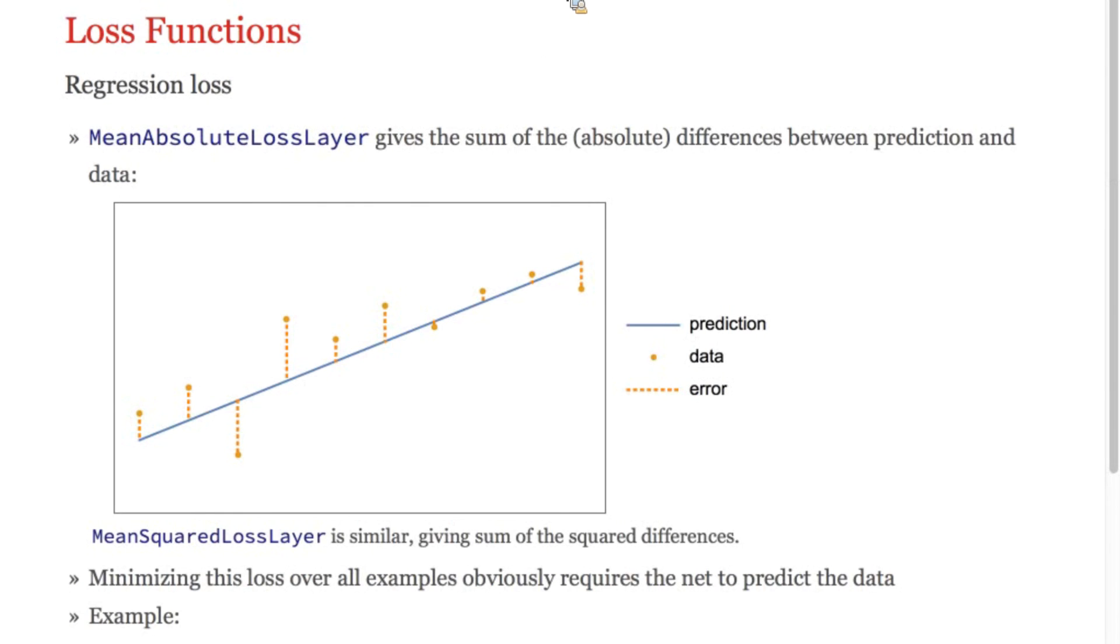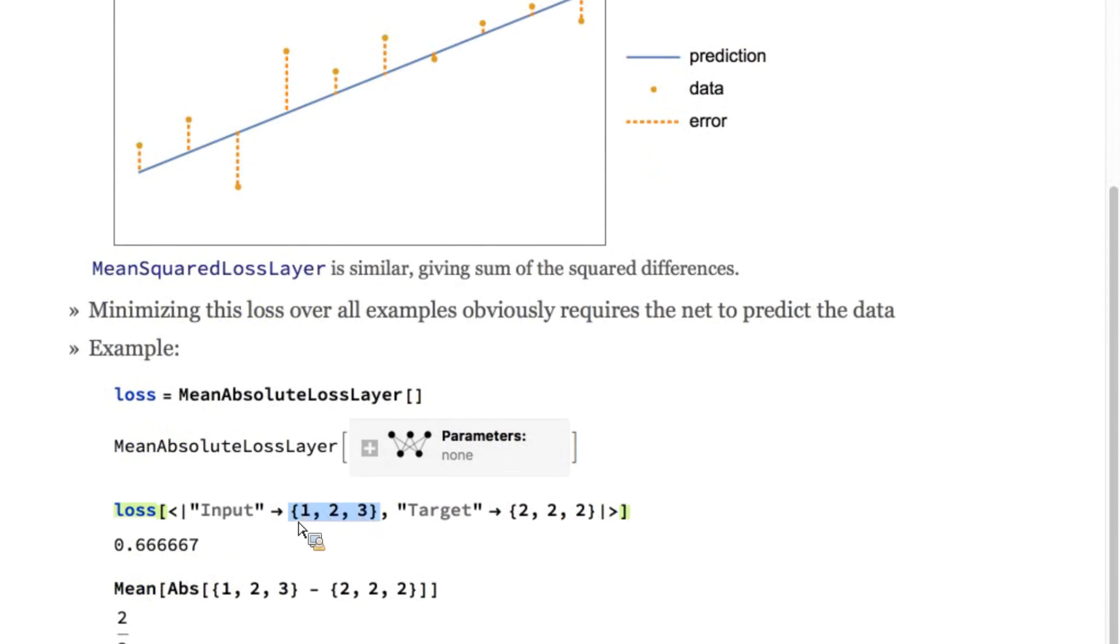Let's look at an example. For regression problems, you'll usually want to use mean squared loss. But here I'll illustrate mean absolute loss because it is easy to visualize. They're fairly similar. Mean absolute loss measures the average distance between the output of the net and the true value. This example shows the input and target. There's the input and there's the target, and the output is the average distance between them, as you can see.